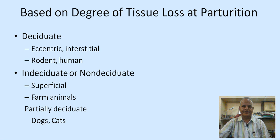Based on the degree of tissue loss at parturition, placenta has been classified as deciduate — seen in human beings and rodents — non-deciduate, seen in most farm animals, and partially deciduate, seen in dogs and cats.